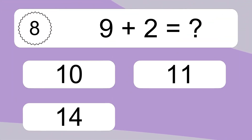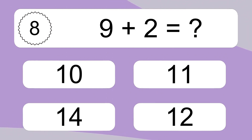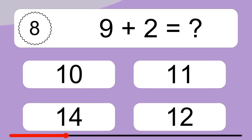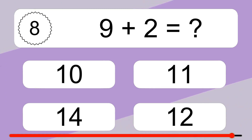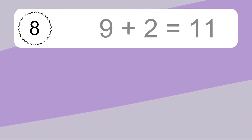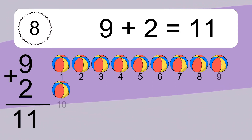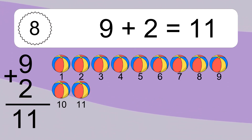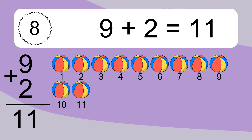9 plus 2 equals what? 9 plus 2 equals 11. Let's count it. 1, 2, 3, 4, 5, 6, 7, 8, 9, 10, 11.